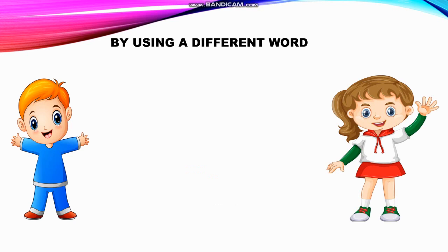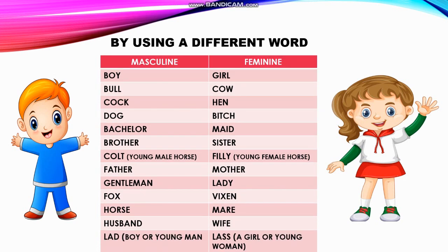Let's look at the first type: forming the feminine by using a different word. On the masculine side we have boy, and on the feminine side we have girl. Bull becomes cow. Instead of using a modified form of the same word, we use a completely different word for the feminine.